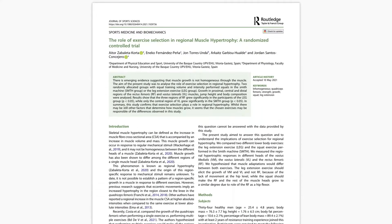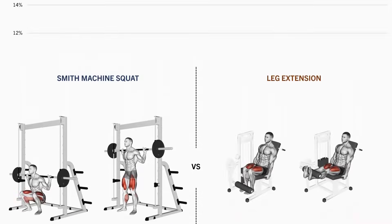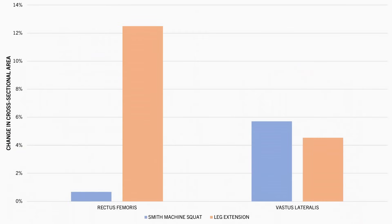Another related study compared the effects of performing Smith machine squats versus leg extensions on quadriceps hypertrophy. The squats involve greater tension in the bottom position when the quads are most lengthened and less tension at the top when they are shortened, while the leg extensions — depending on the specific machine — generally involve less tension in the bottom when the quads are lengthened and more tension at the top when they are shortened. It was found that the rectus femoris saw greater muscle growth from the leg extensions, which is expected due to its biarticular nature, while the vastus lateralis saw similar growth from both exercises.